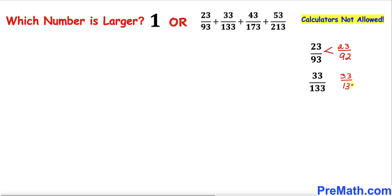Now let's focus on this next fraction. Obviously, this fraction 43/172 is going to be smaller than 43/173 if I reduce the denominator by one.